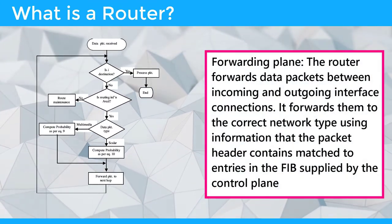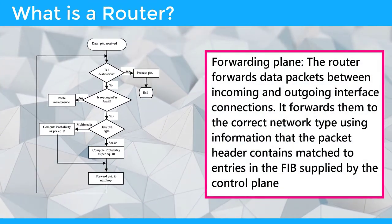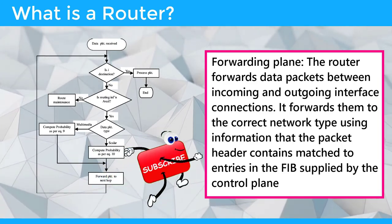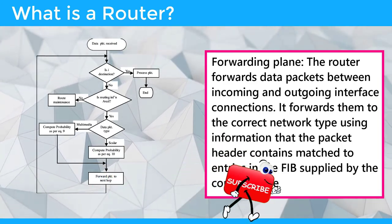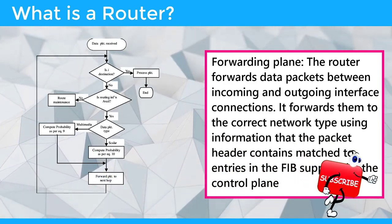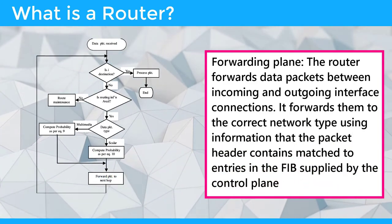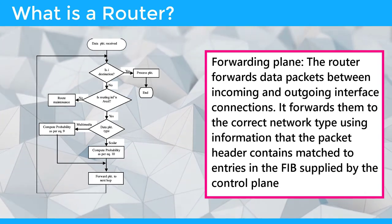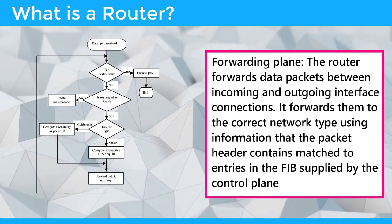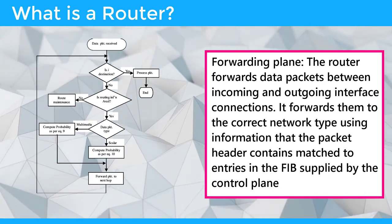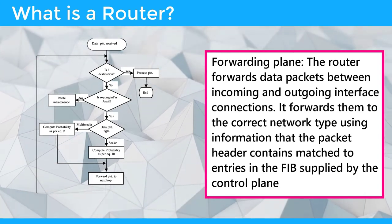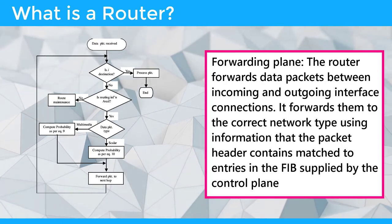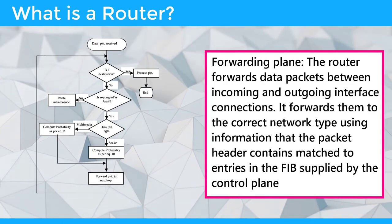The router forwards data packets between incoming and outgoing interface connections. It forwards them to the correct network type using information that the packet header contains, matched to entries in the FIB supplied by the control plane.